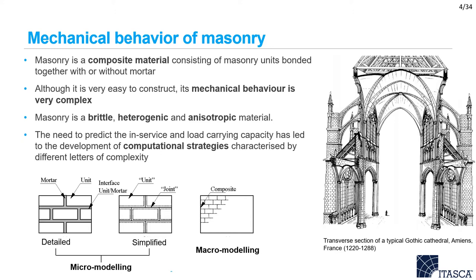Let's first discuss the mechanical behavior of masonry. Masonry is a composite material consisting of masonry units bonded together with or without mortar. Although masonry is very easy to construct, its mechanical behavior is non-linear and thus complex to predict. Masonry is very weak in tension and very strong in compression. Mortar joints act as planes of weakness in masonry. The need to predict deformations and load carrying capacity has led to the development of computational strategies characterized by different levels of complexity.